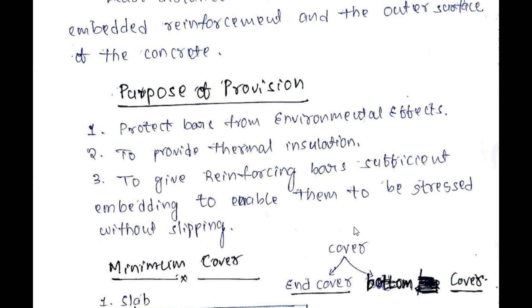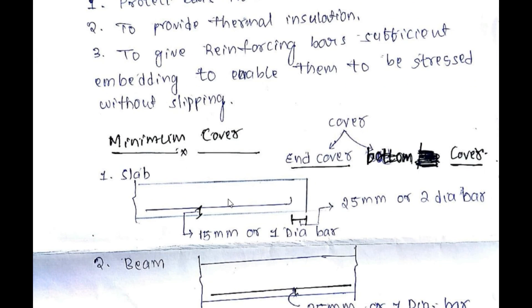Let us see the minimum cover to be provided for different structural elements. For a slab, there are two different clear covers: bottom clear cover and end clear cover. The bottom cover should be 15 mm or 1 bar diameter, whichever is more. The side or end cover is 25 mm or 2 times half bar diameter, whichever is more.